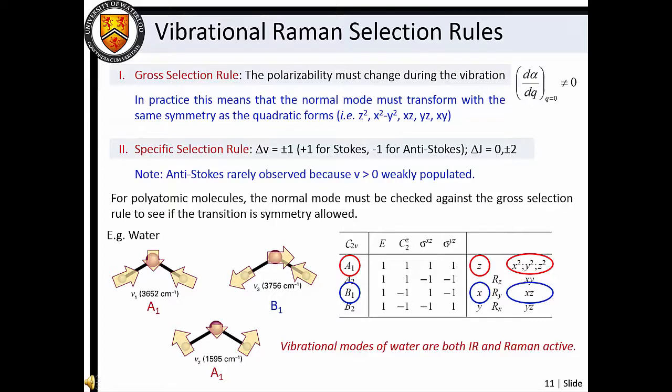For example, the vibrational normal modes of water are of A1 and B1 symmetry, and we see that there are quadratic functions that transform under C2V symmetry for both the A1 and B1 irreducible representations. Thus, the vibrational Raman transitions of water are symmetry allowed. Note that these same modes are IR active.